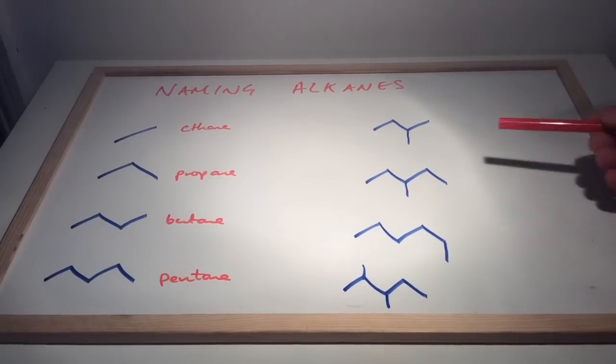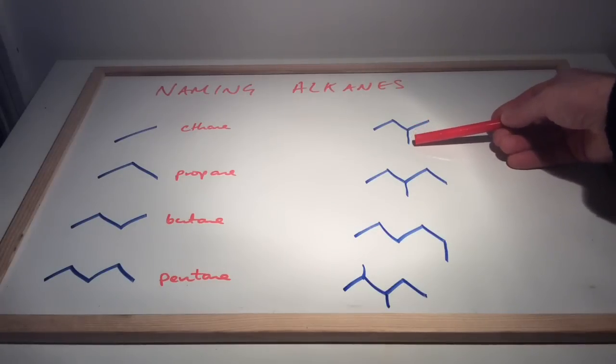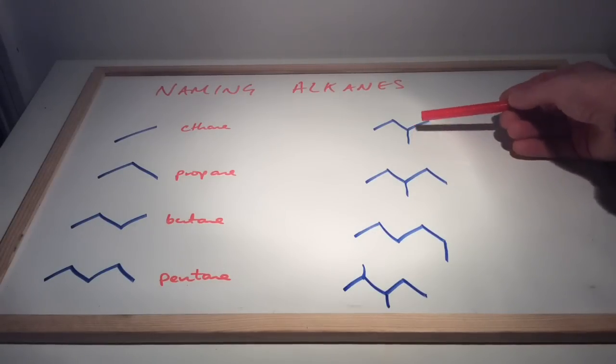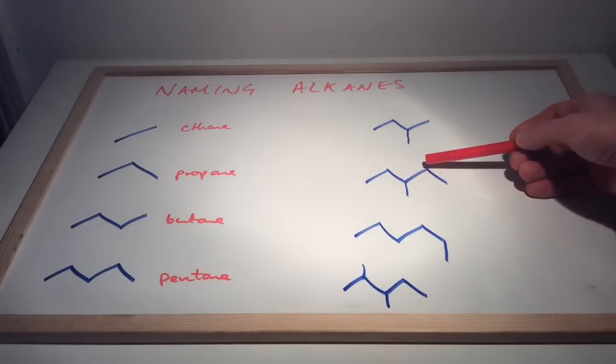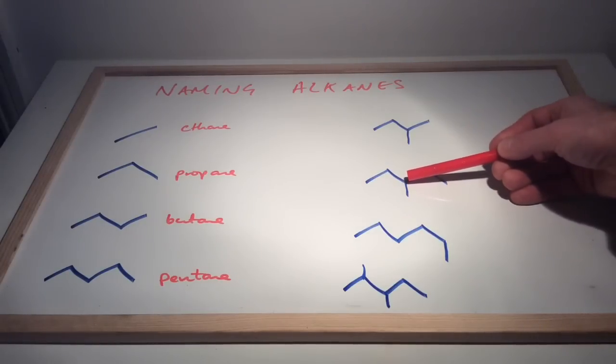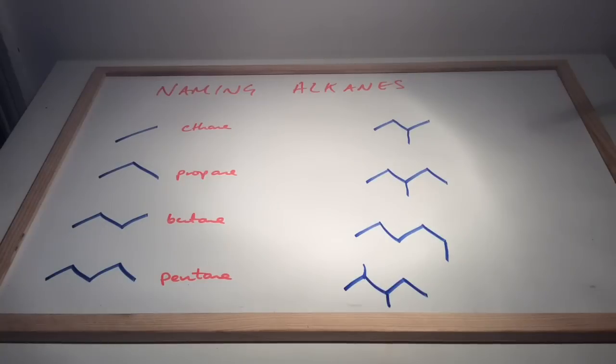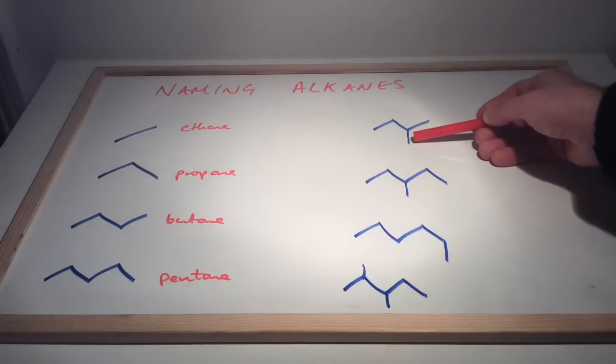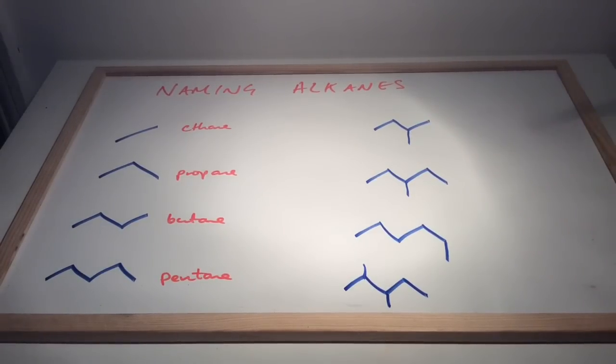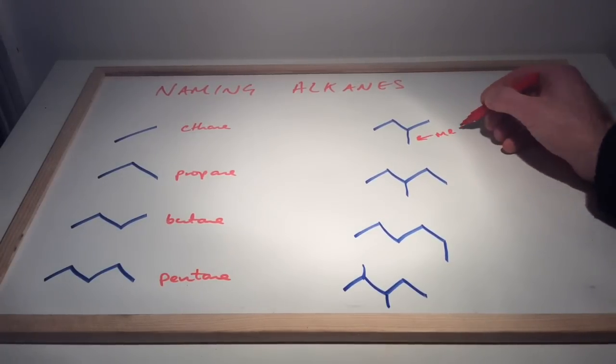You can see we've got a branch here—this part of the molecule is an extra part sticking off the main chain if you like. So the main chain would be this, and then we've got a branch here. We're going to look at naming these now. This single line here is what we call a methyl group. It's a single carbon with three hydrogens attached.